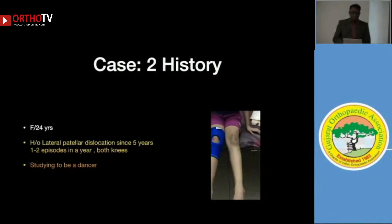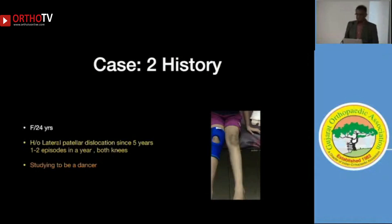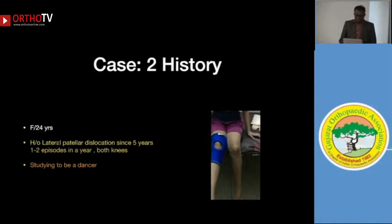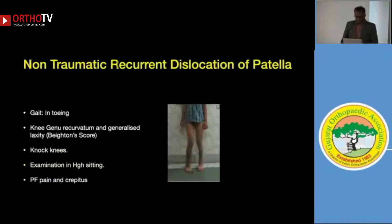Now comes the more complicated scenario — how and where to correct. A 24-year-old female with recurrent patellar dislocation in both knees, one to two episodes per year, wanting to be a dancer. The J-curve is demonstrated — you can see the patella popping out when she extends the knee. When the patient flexes or extends, the patella just goes out — this is the J-curve phenomenon.